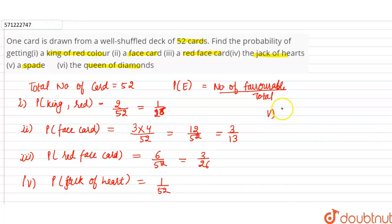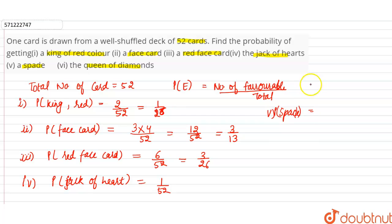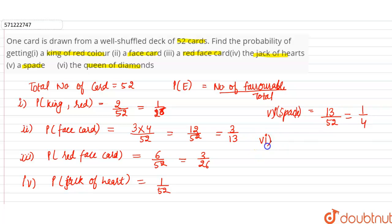The fifth part asks for the probability that the card drawn is a spade. There are four suits: spade, club, diamond and hearts. Total number of spade cards are 13. So out of 52, 13 are spade cards, and probability will be equal to 1 divided by 4.